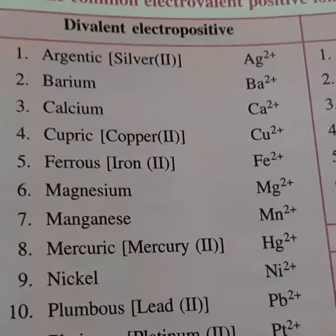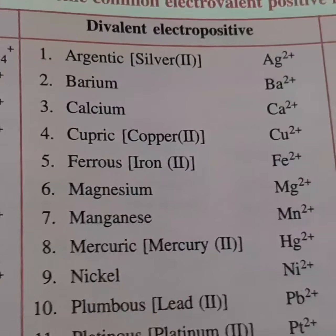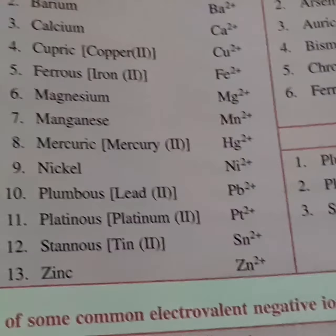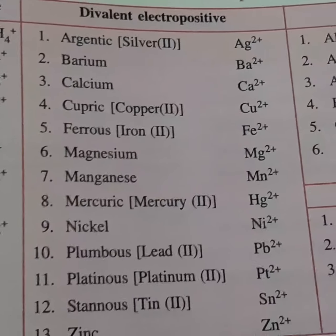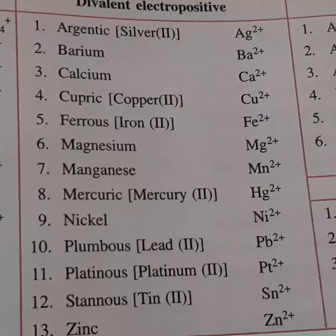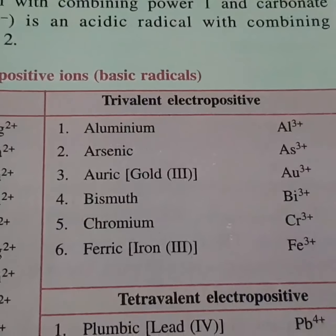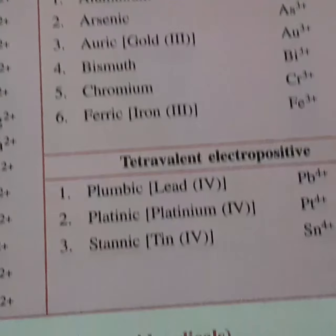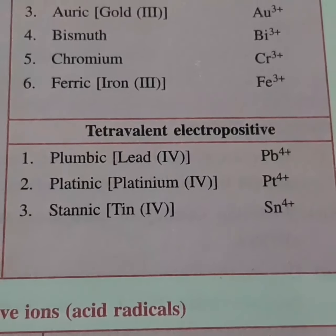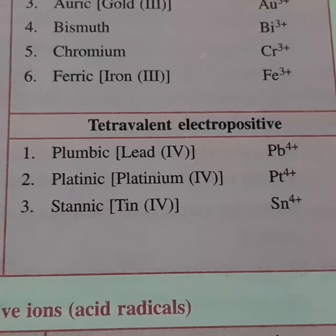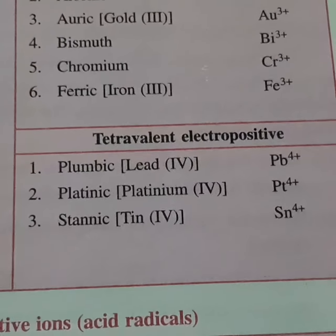We also have a divalent list where elements carry a plus two charge — these are cations with a plus two charge. Similarly, trivalent and tetravalent electropositive radicals are also given in your book.